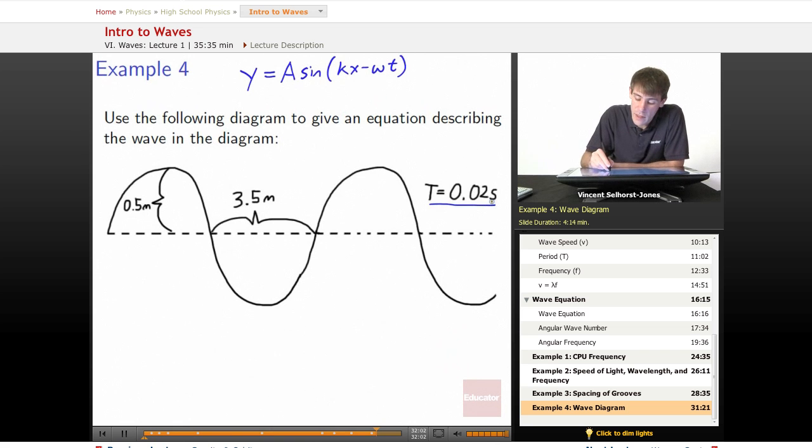So to begin with, we know that the period is equal to 0.02 seconds, and we know that amplitude is equal to 0.5 meters.